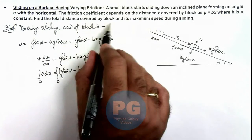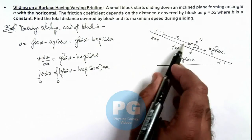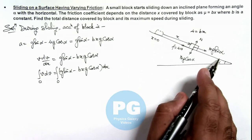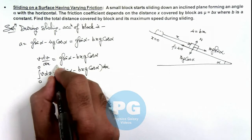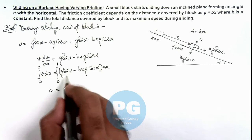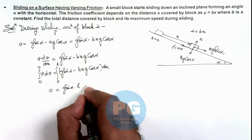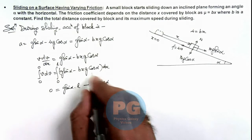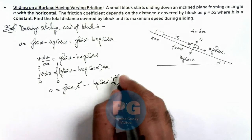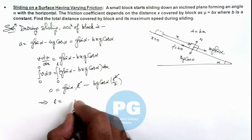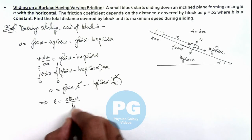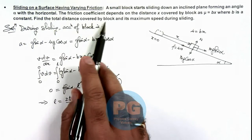To find the total distance covered by the block: as the block travels, friction increases since mu equals bx. When friction increases to a high value, the block comes to rest again, so speed becomes zero and x changes to L. The left-hand side becomes zero, and integrating the right-hand side gives g sine alpha times L minus b g cosine alpha times L squared over 2 equals zero. Cancelling terms, the total distance L equals 2 tan alpha divided by b.